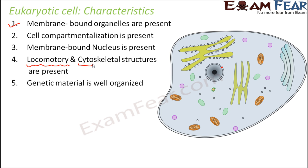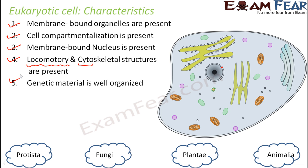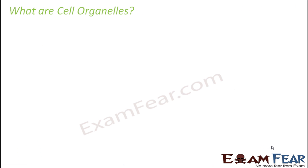Genetic material is well organized — it is confined within the nucleus and present in an organized way. These are some of the very basic characteristics of eukaryotic cells. Eukaryotic cells are seen in the kingdom Protista, Fungi, Plantae, and Animalia — these are the kingdoms where we have eukaryotic cells.